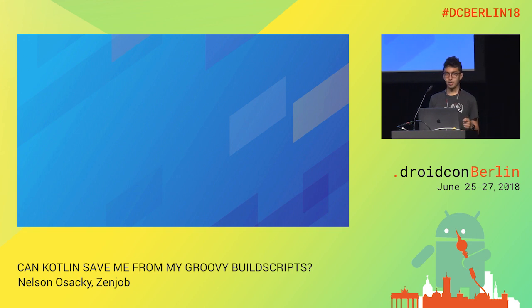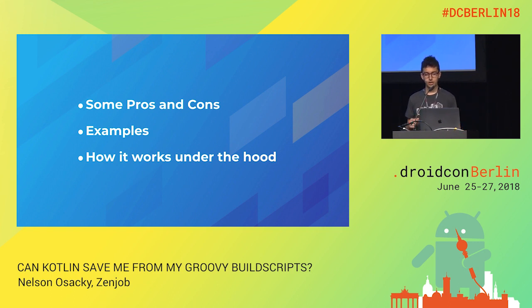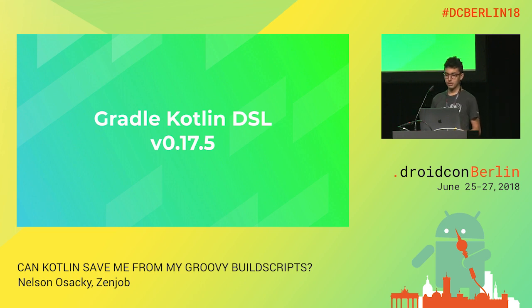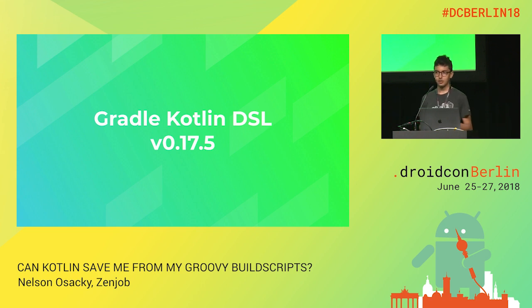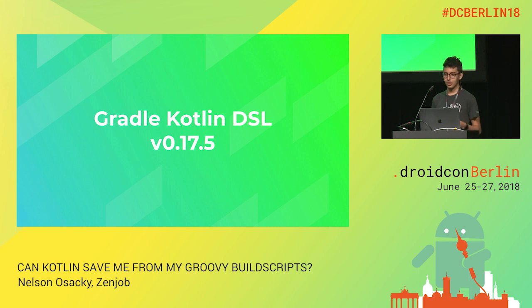In this talk, we're going to cover pros and cons of migration, some examples, and then we're also going to talk about how the Kotlin DSL works under the hood. The current version of the Gradle Kotlin DSL is version 0.17.5. DSL means domain-specific language. This version number starts with a 0 because it's still in a pre-release state. We use it in production, it's stable, but the APIs may change.